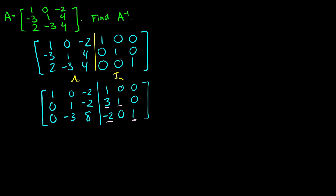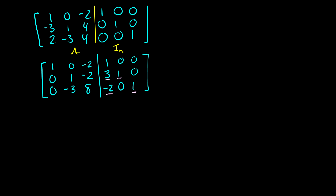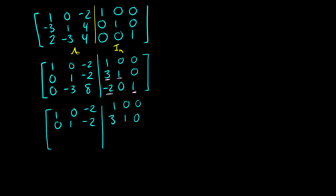So we can kind of see our elementary matrix coming into play here. The second row says we've taken row 2 and added 3 of row 1, and the third row says we've taken row 3 and subtracted 2 of row 1. Now we need to work on the second column. The first and second rows look fine — we keep those the same. We want to add 3 times the second row to the third row: we get 0, 0; adding -6 gives 2; then -2 + 9 = 7; and on the identity side we get 3 and 1.